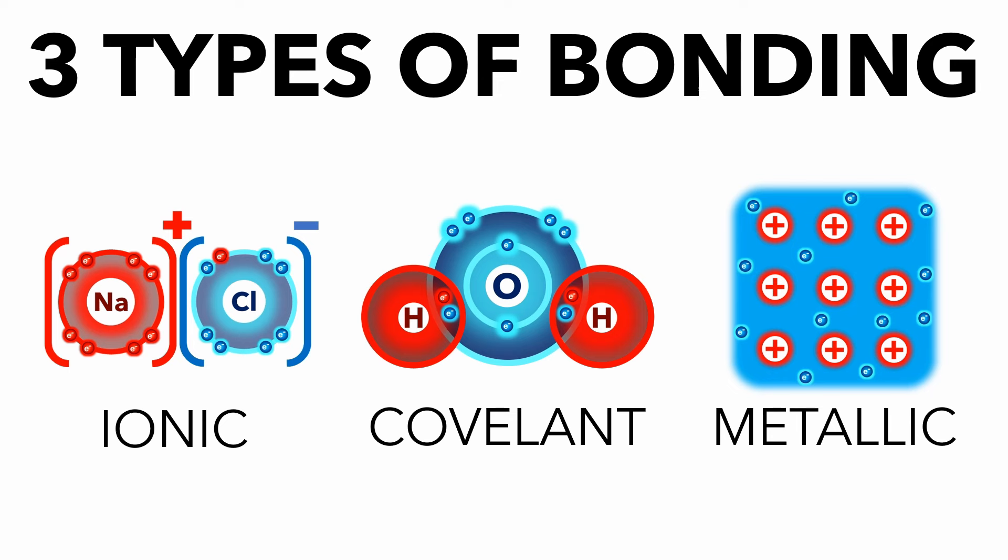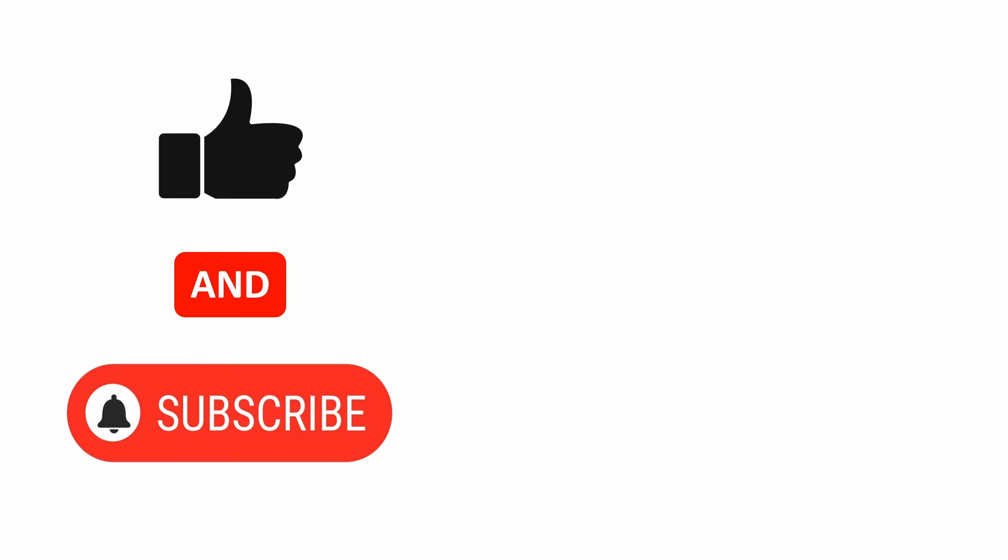So these are the three types of bonding. For a closer look at covalent compounds with some examples, see the following video. And don't forget to like and subscribe.